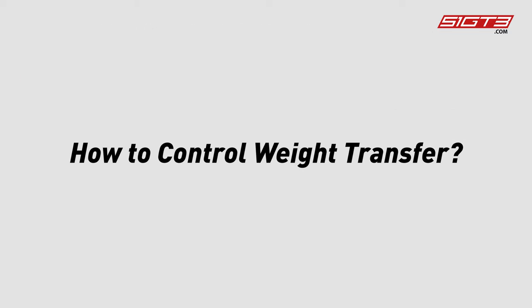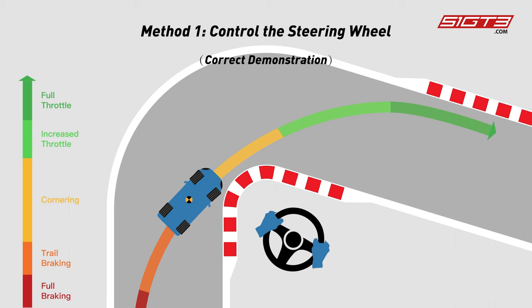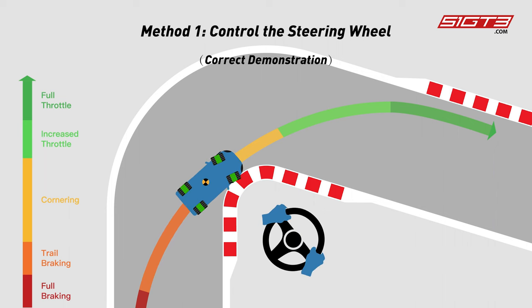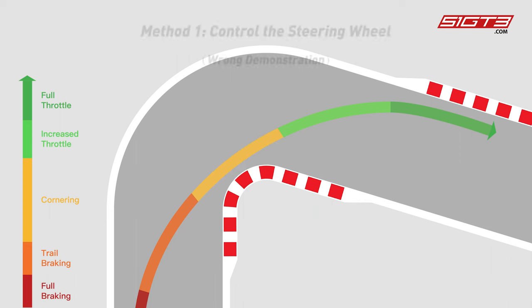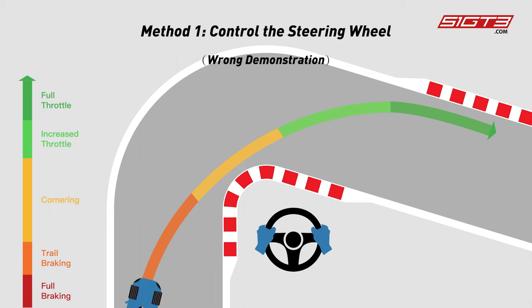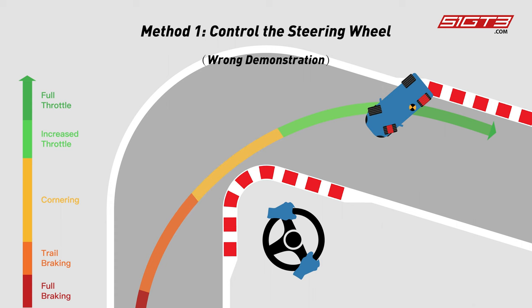Understanding the key to the mid-corner phase, we introduce two aspects of how to control the weight transfer. The first method is to control the steering wheel. In order to control the weight transfer from side to side smoothly, we need to turn the steering wheel smoothly so that the four wheels can fully exert their grip. If you turn the steering wheel too hard, the weight will be transferred out too quickly, causing the car to skid.